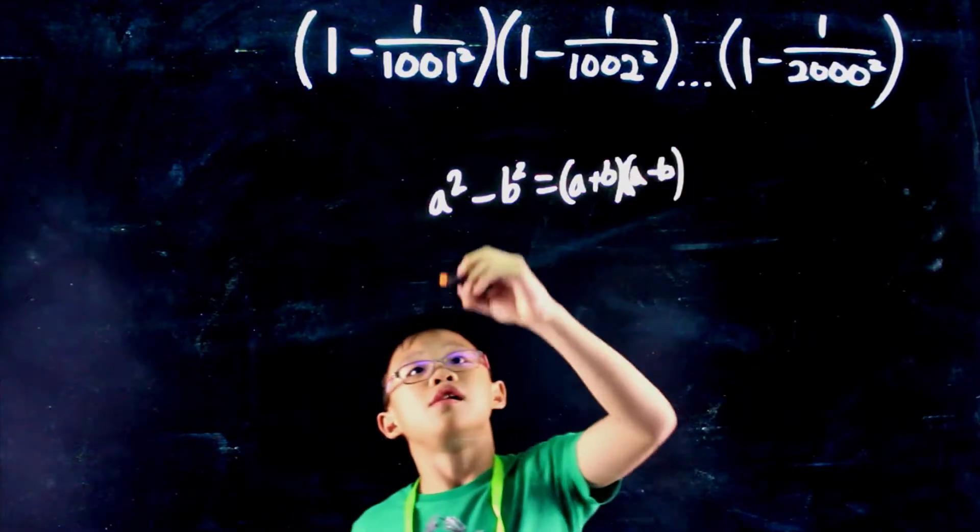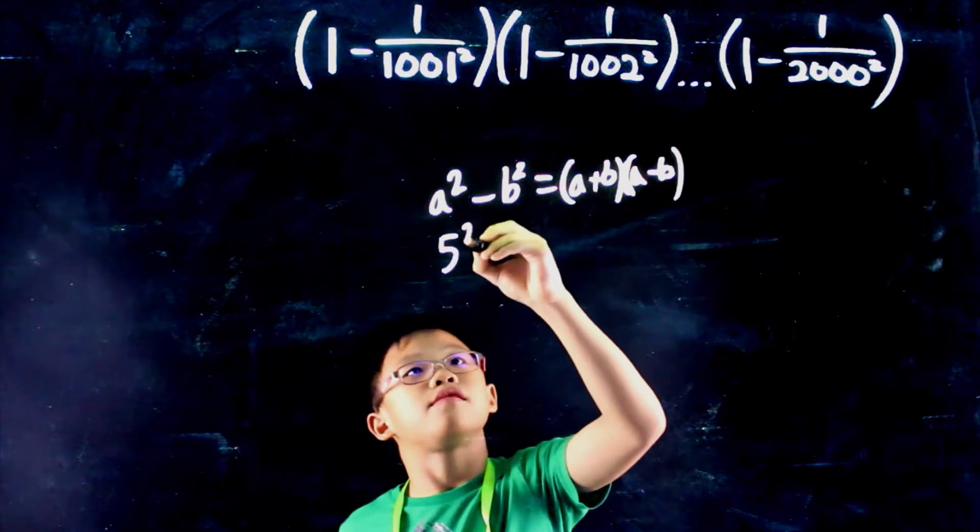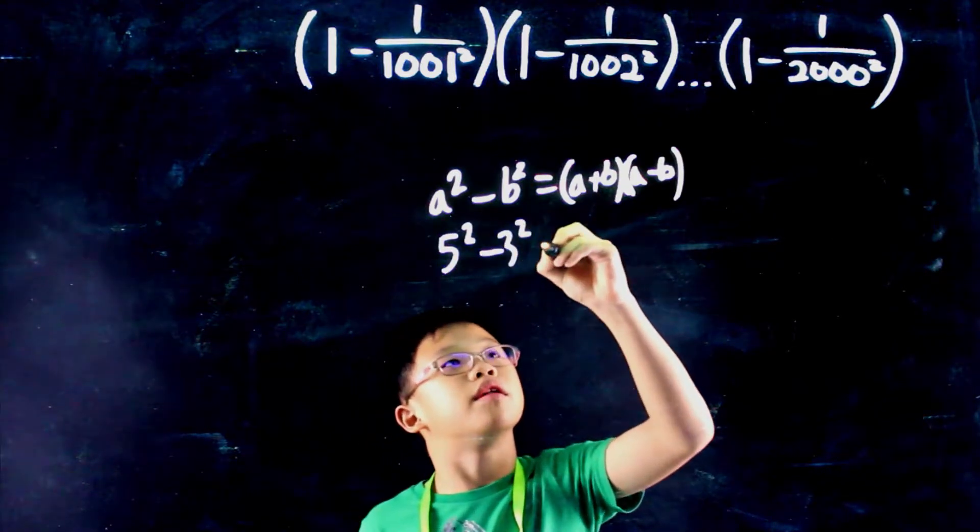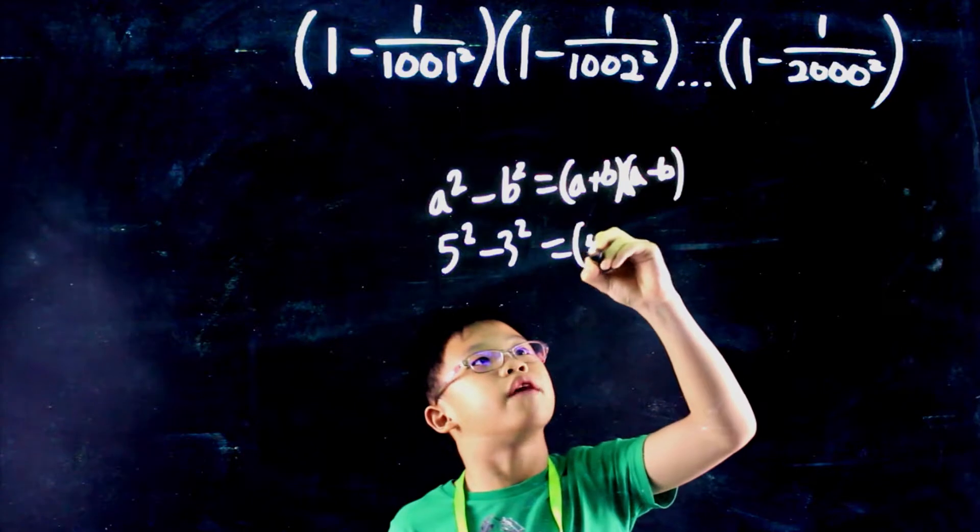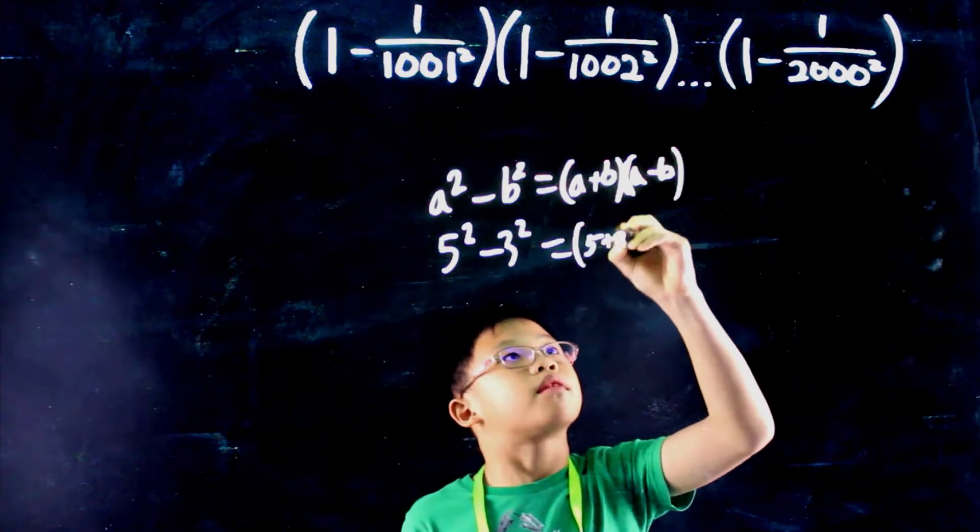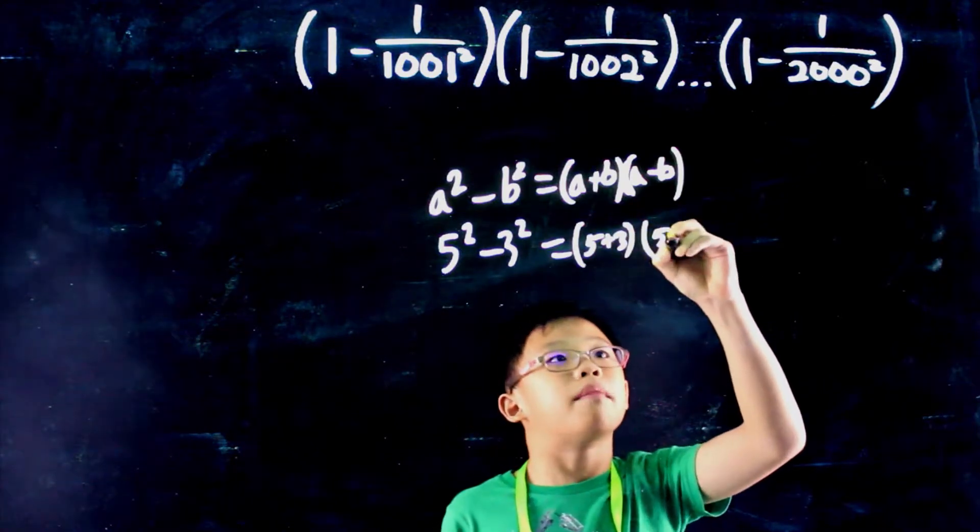And to prove it, let's start. Let's try an example. 5 squared minus 3 squared equals a plus b is 5 plus 3 times a minus b is 5 minus 3.